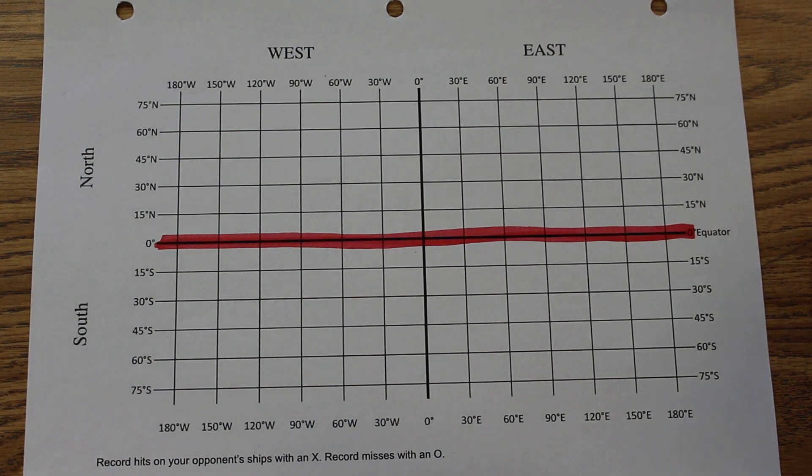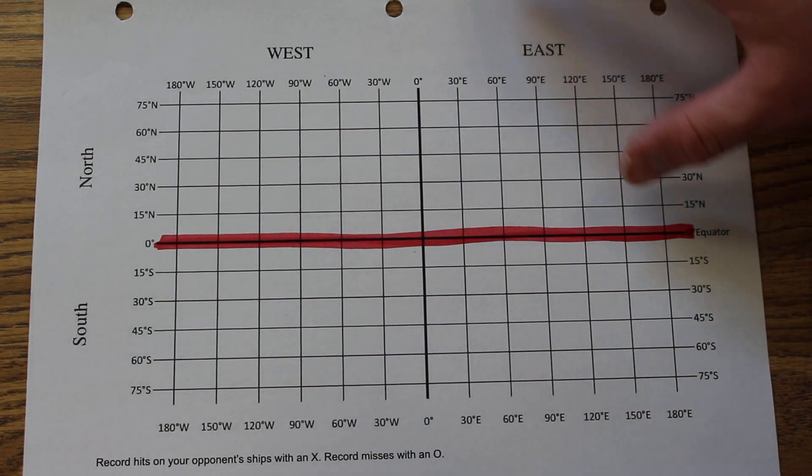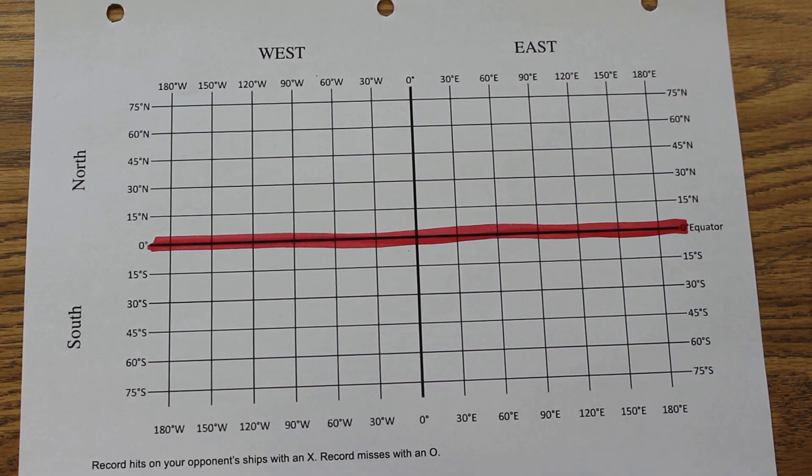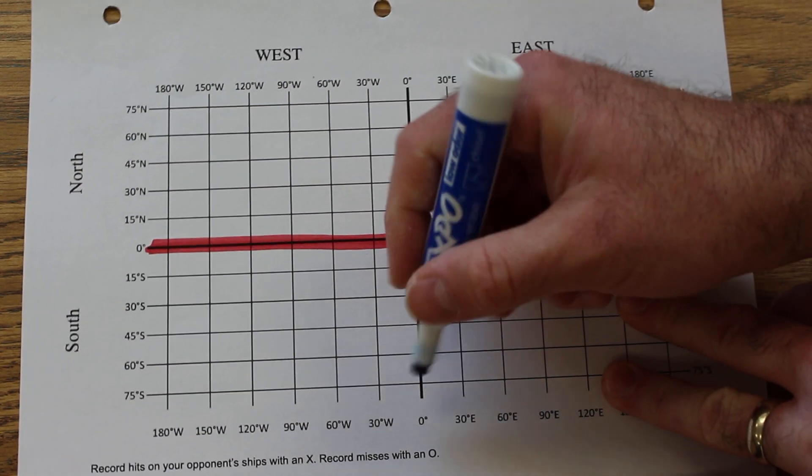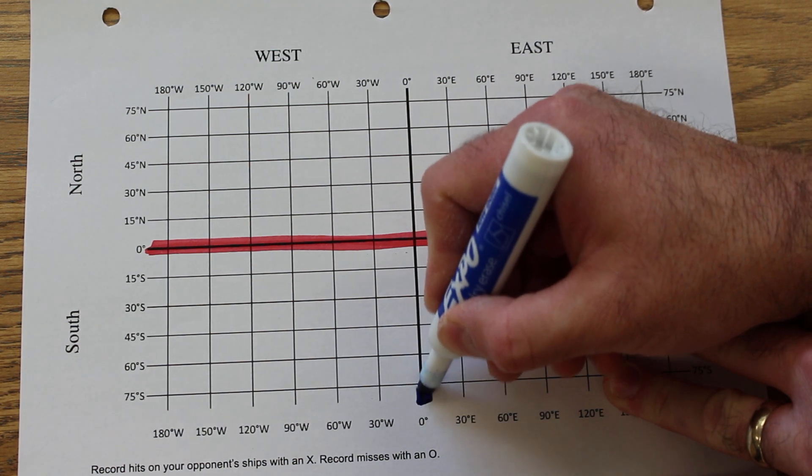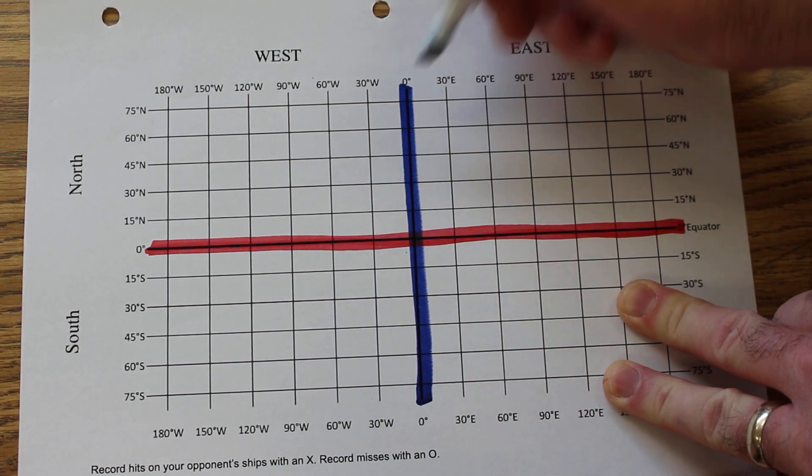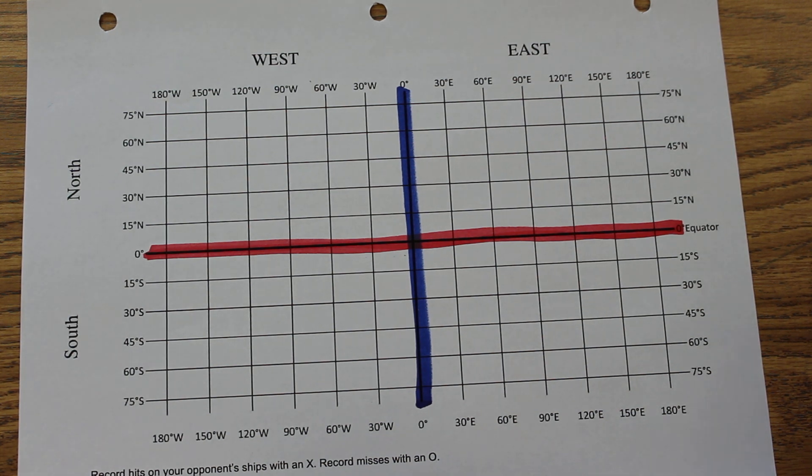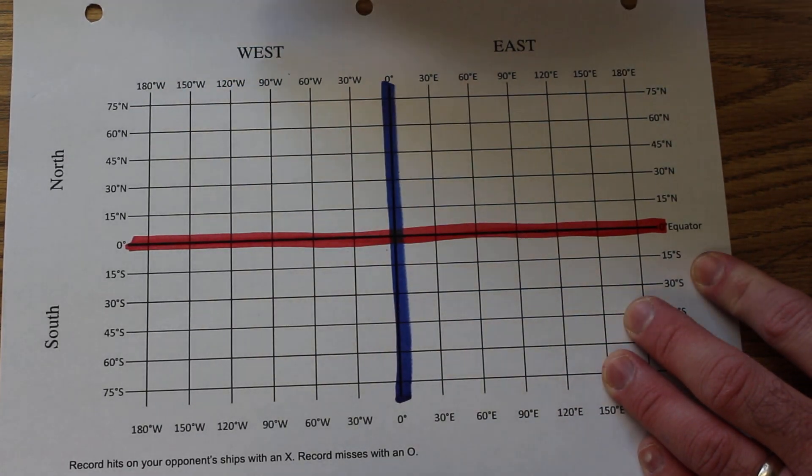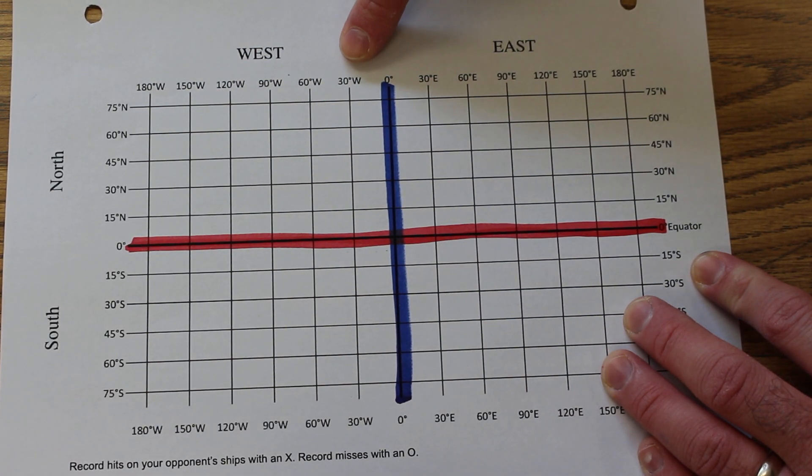The prime meridian divides the earth into a west side or west half and an east half. Anything in the western hemisphere is going to be labeled west.